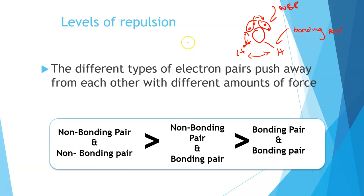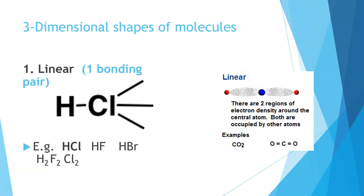This is why we see water forming a bent shape. If bonding pairs and non-bonding pairs had equal repulsion, water would actually form a straight line — a linear molecule. It doesn't, because these non-bonding pairs push down on the bonding pairs, forcing the hydrogens to come closer together and giving the non-bonding pairs more space.